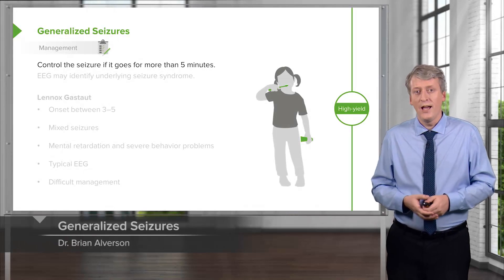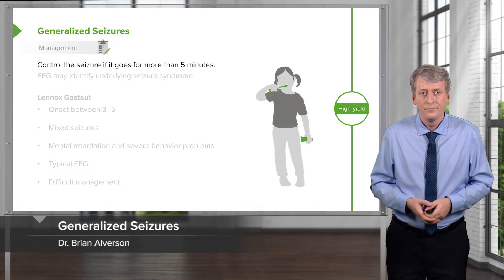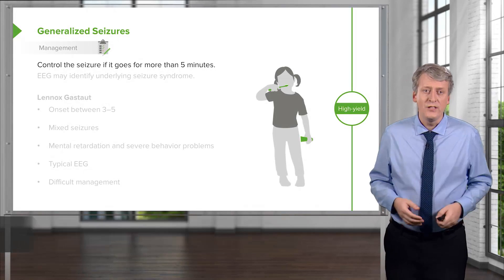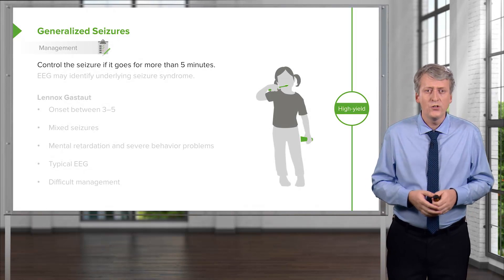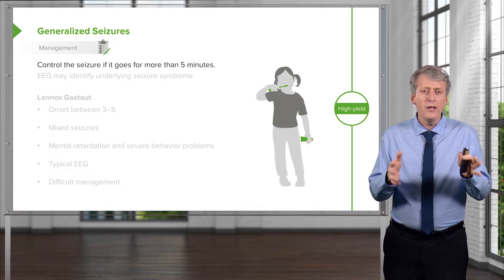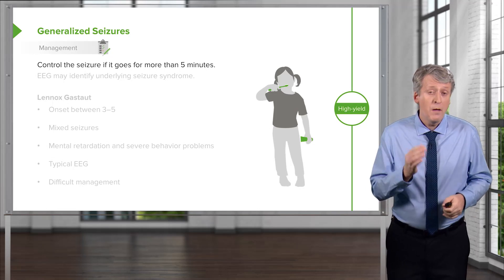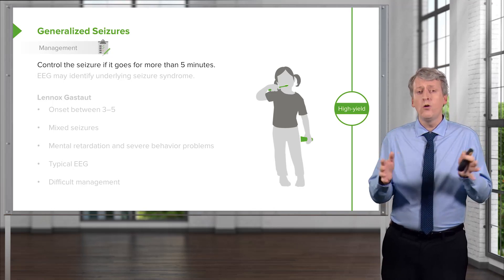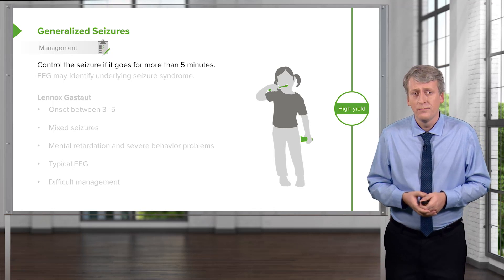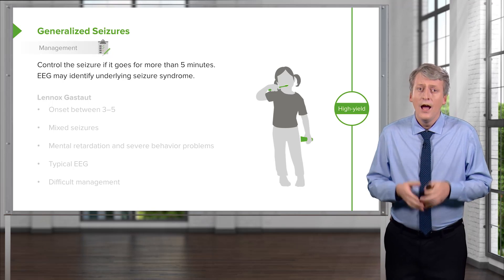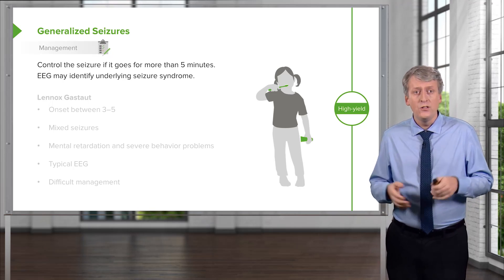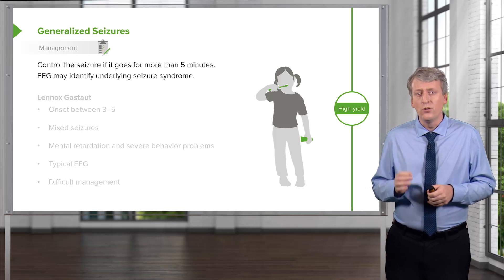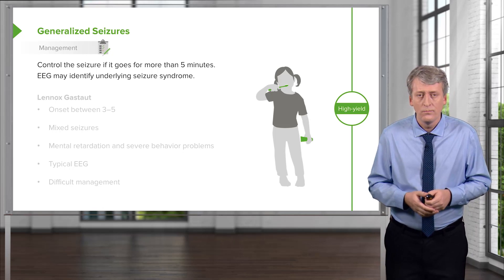Let's move on to generalized seizures. In a patient with generalized seizures, it's important to control the seizure, but you've got about five minutes. Most pediatric seizures will stop of their own accord within five minutes. An EEG after the seizure is done may be useful for identifying underlying seizure syndromes.